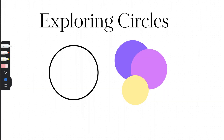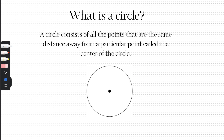Hey everybody, Dr. Nelson here. This is a video lesson about exploring circles. So first of all, just what is a circle? A circle consists of all the points that are the same distance away from a particular point called the center of the circle. Here we have a circle, and notice we have a dot — this represents the center.